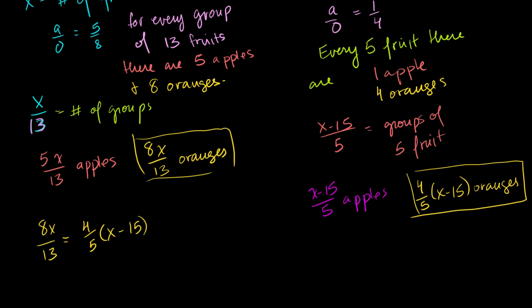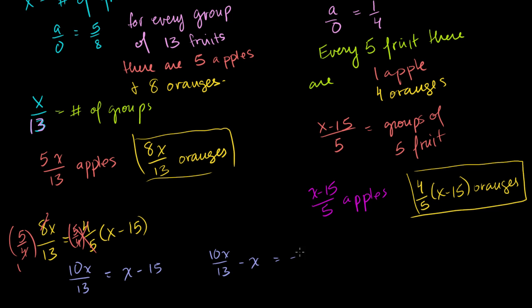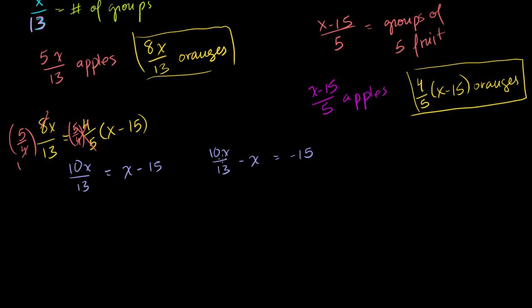Maybe the best way to do this: let's multiply both sides of the equation by 5 over 4. These cancel out. The left-hand side becomes 10x over 13, which is equal to x minus 15. Now let's subtract x from both sides, and we get 10x over 13 minus x equals minus 15. That's the same as 10x over 13 minus 13x over 13, which equals minus 3x over 13, is equal to minus 15.